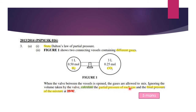calculate the partial pressure of each gas and the final pressure of the mixture at 25 degrees Celsius. I highlight the keyword 'calculate' because we have three things to calculate in this question. First, the partial pressure of each gas — we have two different gases, so we calculate the partial pressure of H₂ and the partial pressure of CO₂. And lastly, we calculate the final pressure of the mixture.